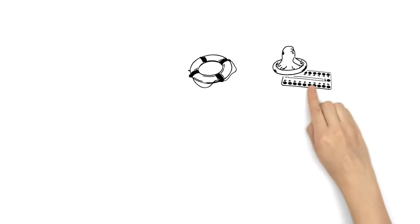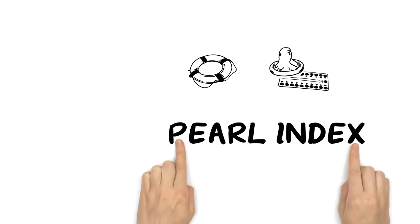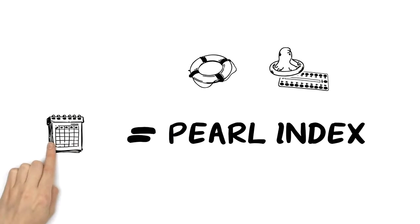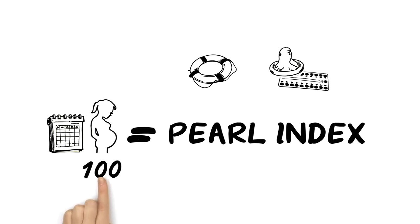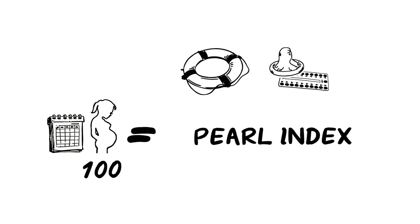You can check the safety of a method through the PEARL index, which calculates the annual number of pregnancies per 100 women. The safer a method, the lower the value.